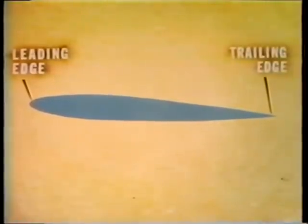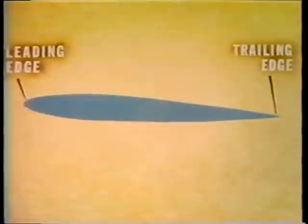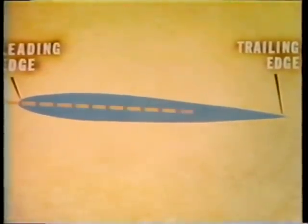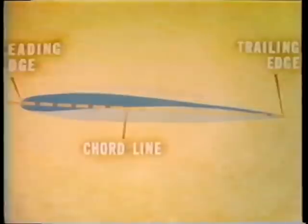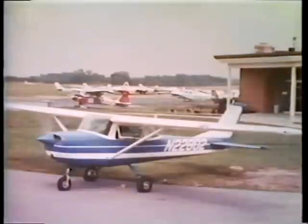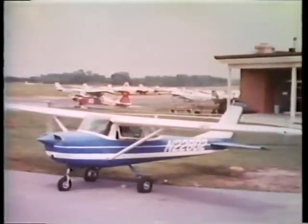Because these airfoils are so important aerodynamically, let's get to know their language. They have a rounded leading edge and a pointed trailing edge. The center line from the center of the leading edge to the point of the trailing edge is called the chord line. We also speak of camber of an airfoil — camber refers to curvature. We've spoken of the forces of lift, angle of attack, and stall that work on an airfoil, but there are two others.